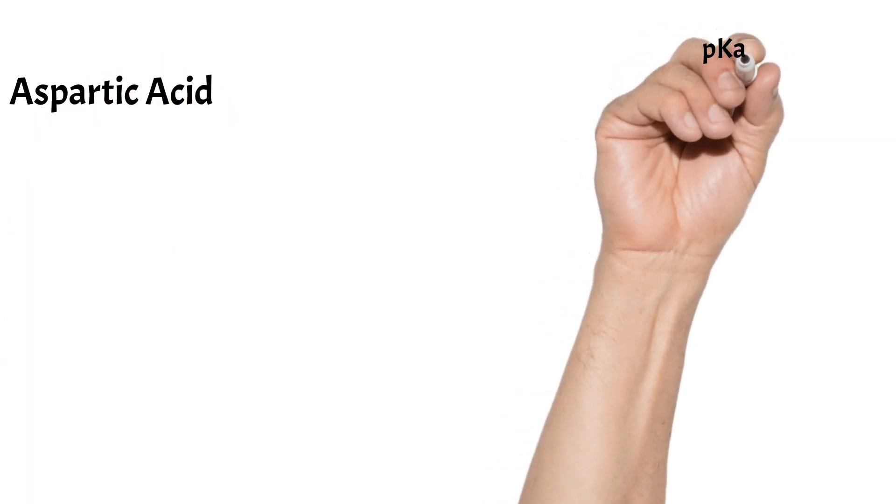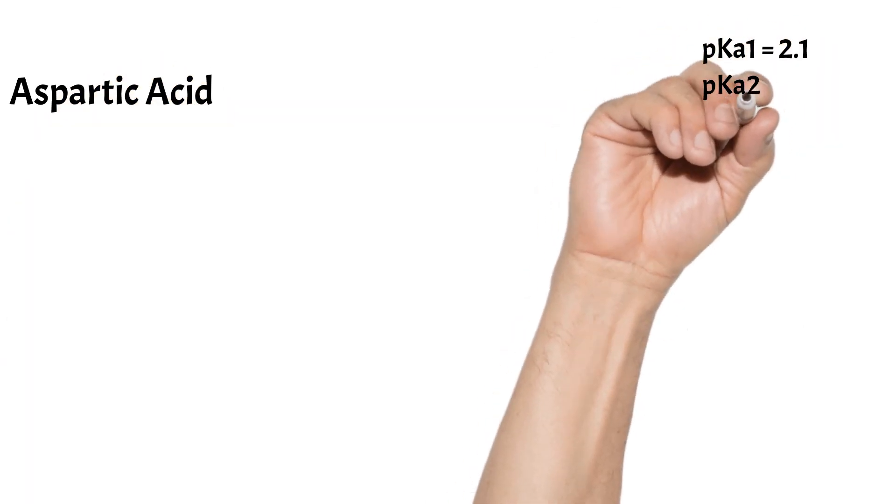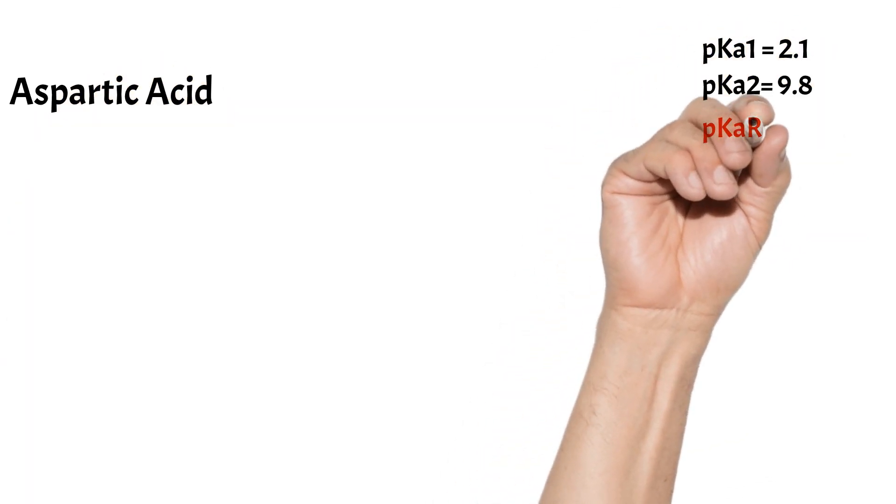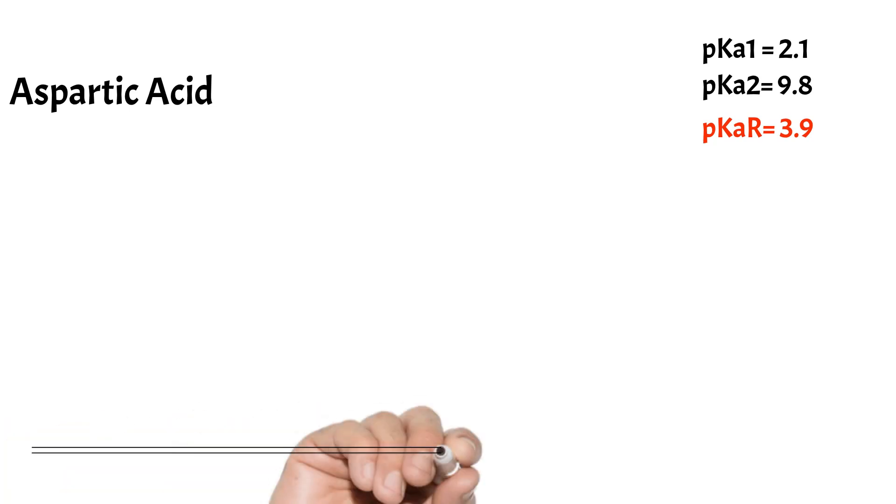What if we have another carboxyl group on the side chain? Let's now take a look at aspartic acid. It has three pK values. The pKr here is for the side chain functional group. And we can tell from the low value that it is for a carboxylic acid group.